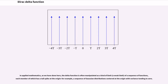In applied mathematics, the delta function is often manipulated as a kind of limit — a weak limit — of a sequence of functions, each member of which has a tall spike at the origin, for example, a sequence of Gaussian distributions centered at the origin with variance tending to zero.